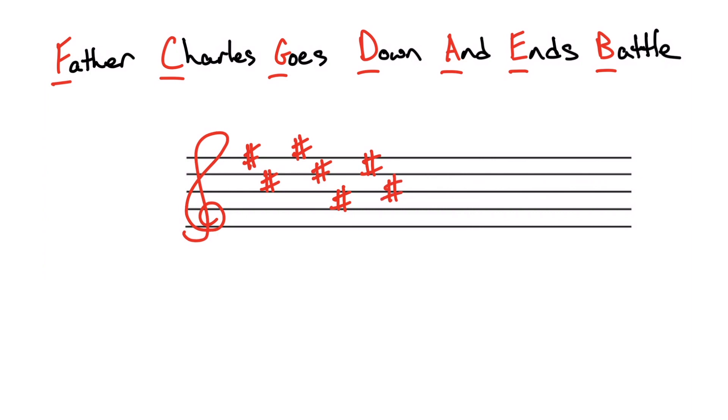You're never going to see it in some weird order like F sharp, G sharp, D sharp, A sharp, C sharp, E sharp. That looks super weird and that would never happen because it always goes in this order: Father Charles goes down and ends battle.